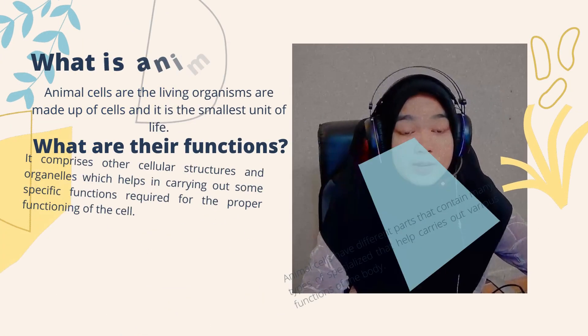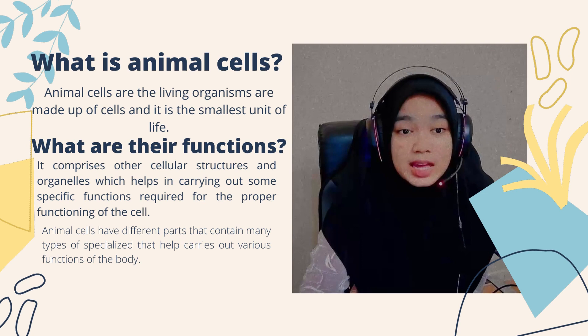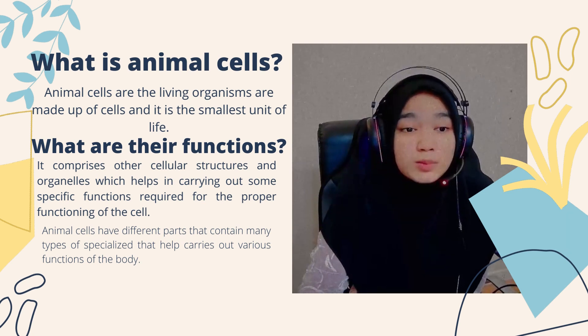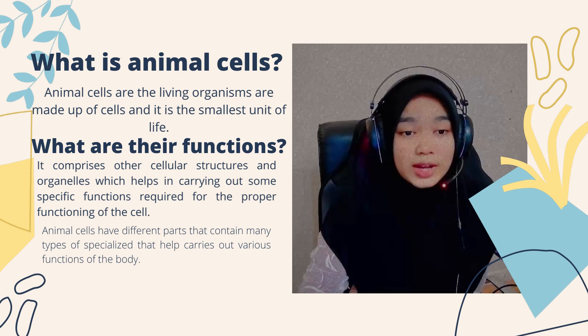What is an animal cell? An animal cell is a living organism that is made up of cells, and it is the smallest unit of life.